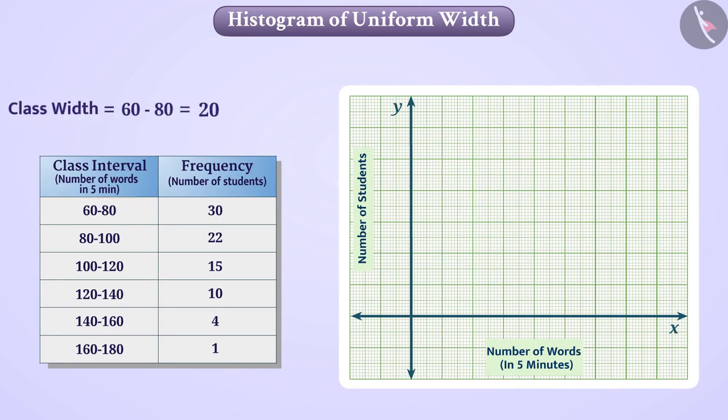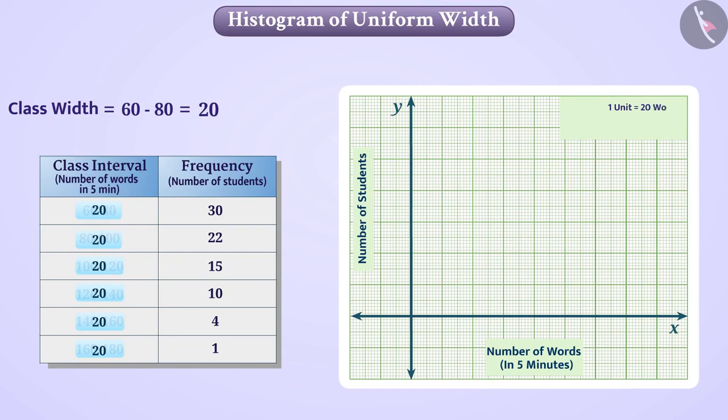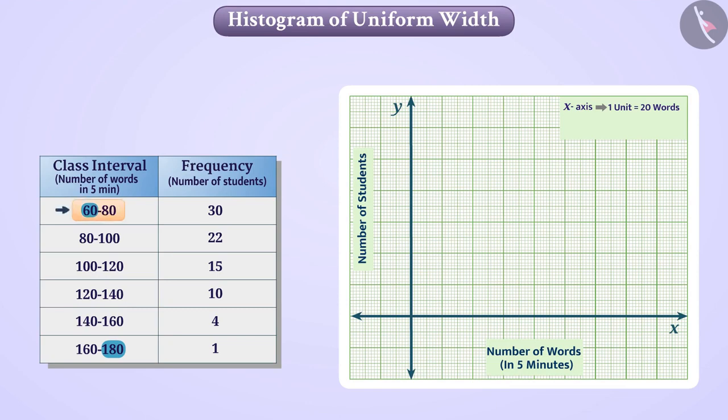Therefore we will take the scale 1 unit is equal to 20 words on the x-axis. Class intervals begin at 60 and end at 180. Since the first class interval is starting from 60, we do not have to show numbers from 0 to 60 on the x-axis.